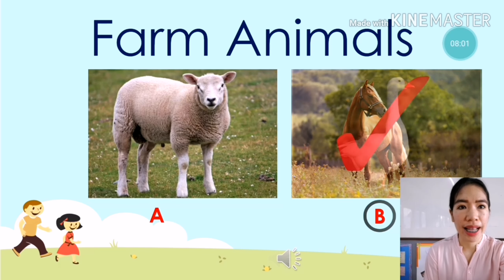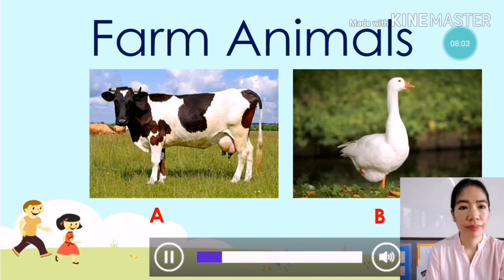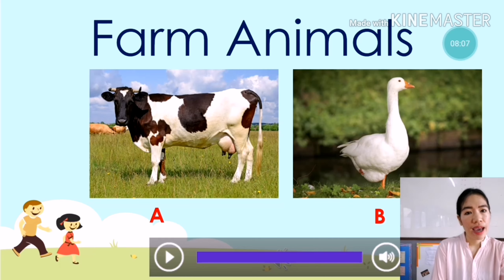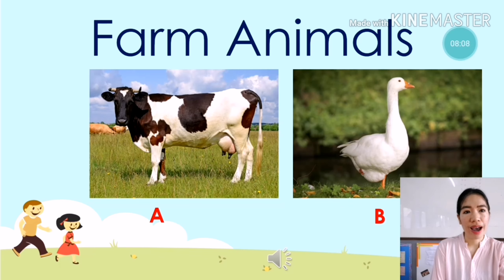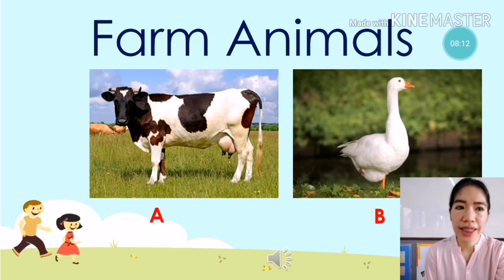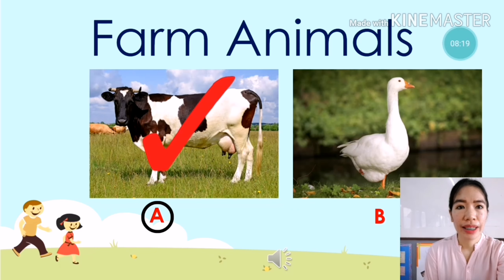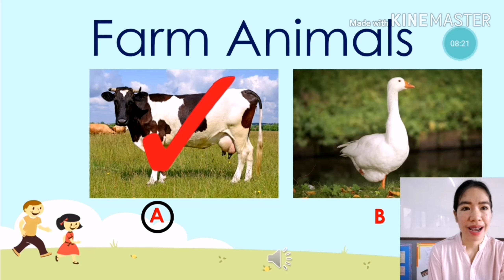On to the next slide — what animal is it? I think this one is very easy. A, cow, or B, goose. What is your answer? My answer is A, cow. Is it correct? Yes, it's correct!